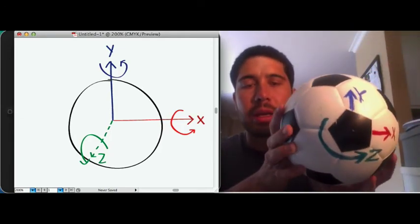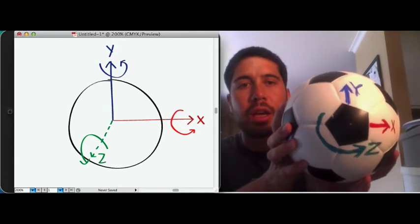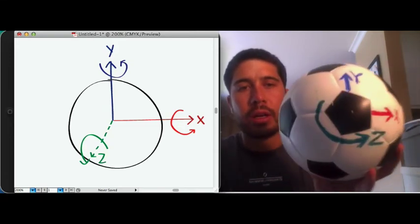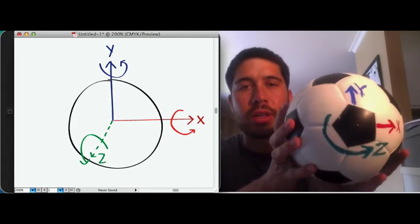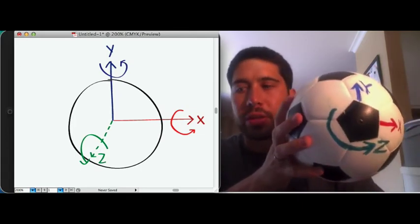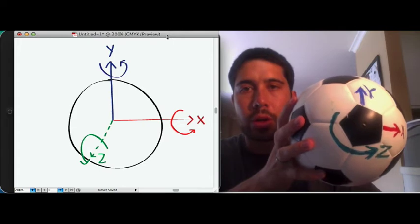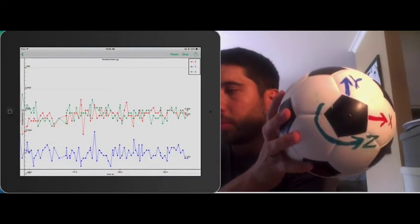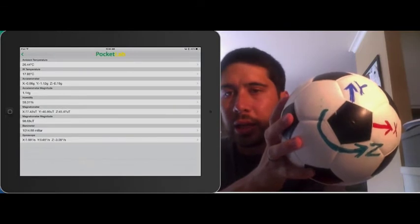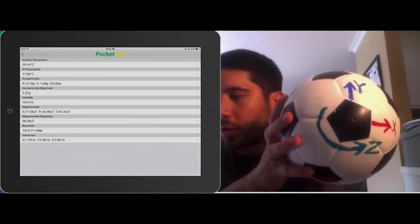And the accelerometers, they are built to measure just linear motion. But we can use the gyroscope to understand the rotation of the soccer ball. So, I'm going to click back over to our PocketLab data, and I'm going to click on the gyroscope.